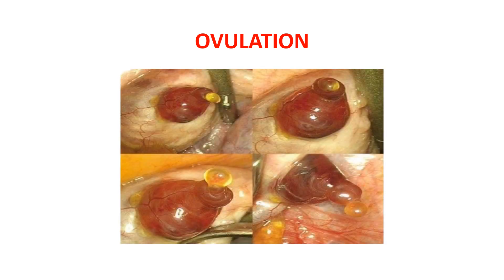Now, let us know what is ovulation. This picture shows a Graafian follicle undergoing the ovulation process. Ovulation in a woman with a normal 28-day sexual cycle occurs 14 days after the onset of menstruation. Shortly before ovulation, the protruding outer wall of the follicle swells rapidly and a small area in the center of the follicular capsule called the stigma protrudes like a nipple. In another 30 minutes or so, fluid begins to ooze from the follicle through the stigma, and about 2 minutes later the stigma ruptures widely, allowing a more viscous fluid which has occupied the central portion of the follicle to evaginate outward. This viscous fluid carries with it the ovum surrounded by a mass of several thousand granulosa cells called the corona radiata.